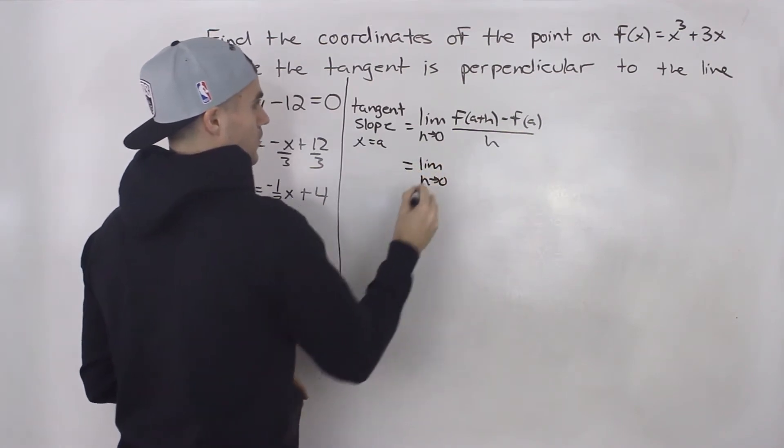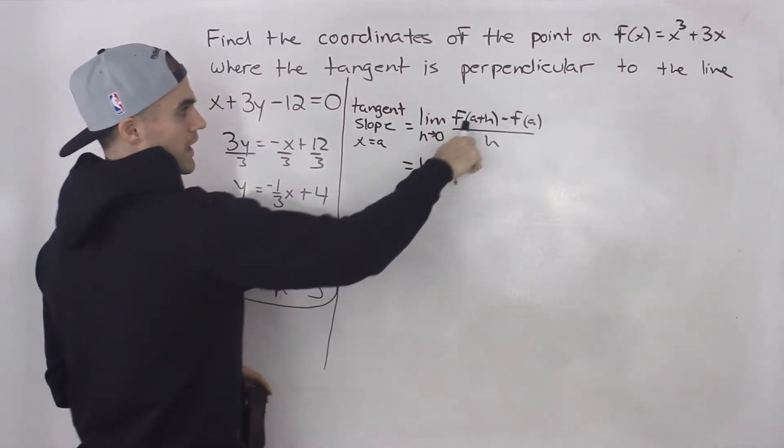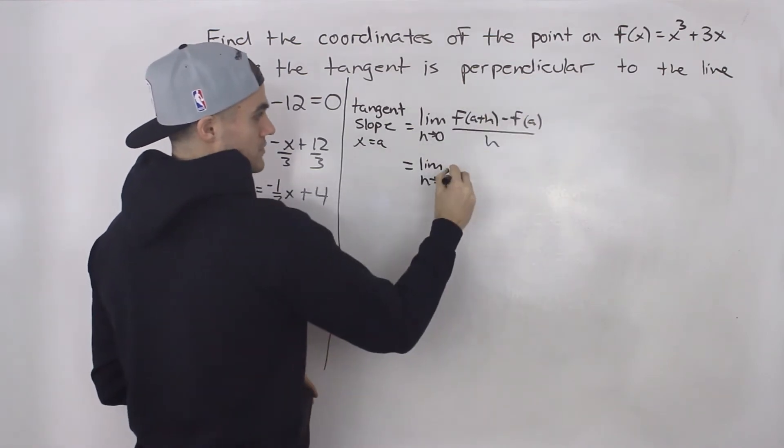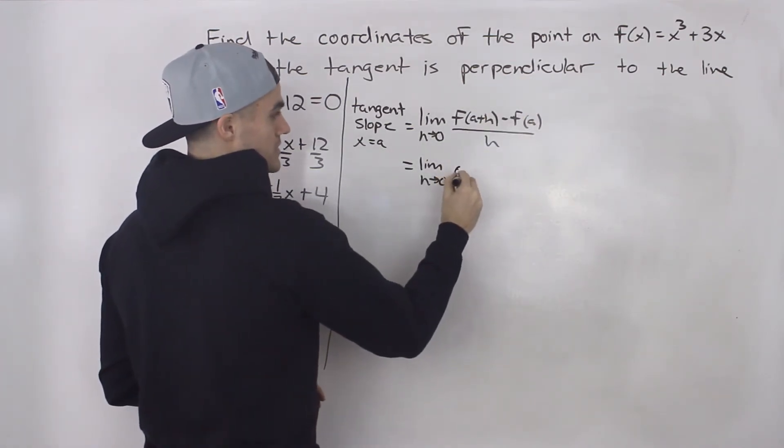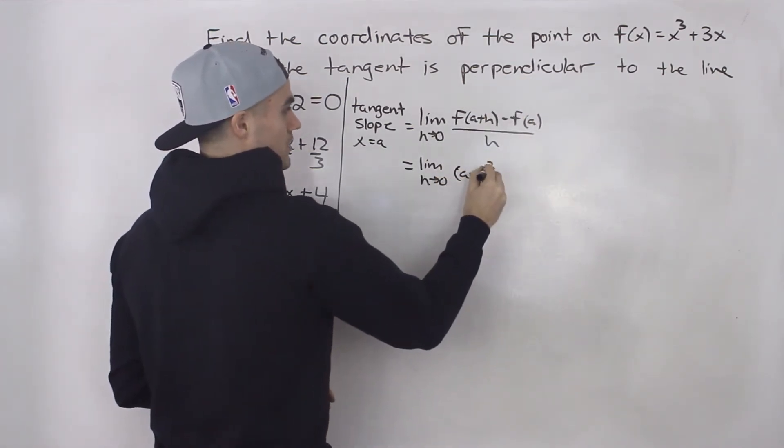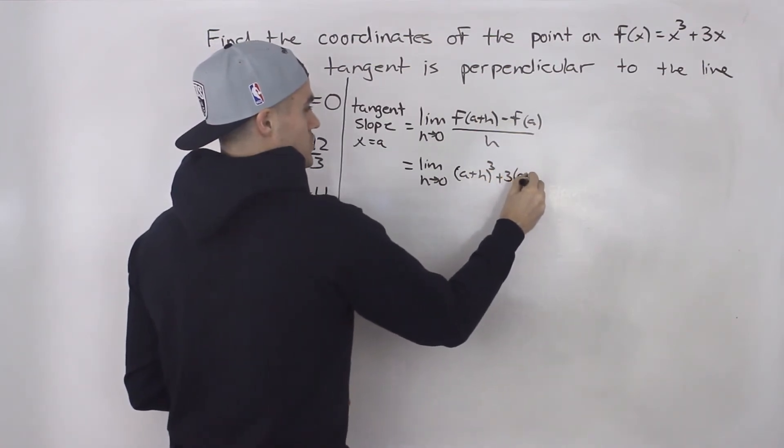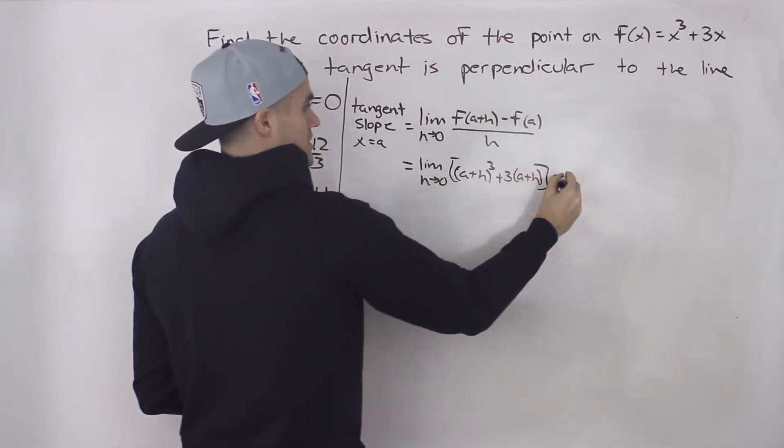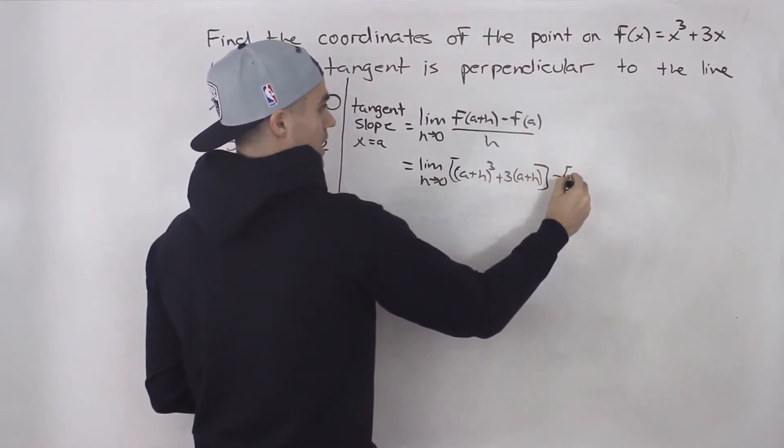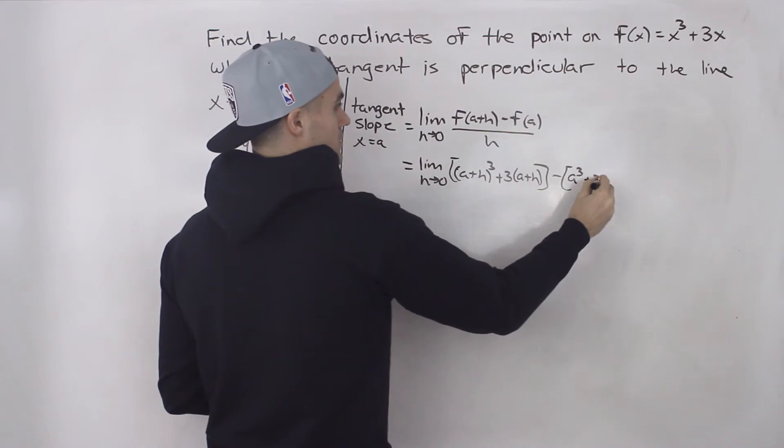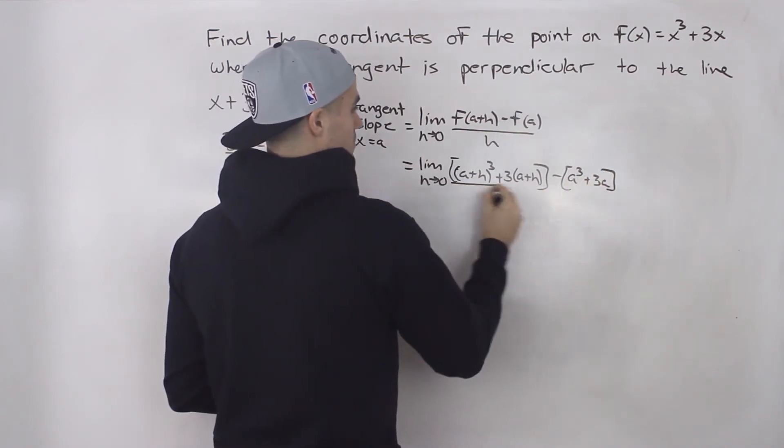So we need to plug in a + h into the x values. So we'll have (a + h)³ + 3(a + h). And then we're going to be subtracting f(a). So that would be a³ + 3a. And that's going to be all over h.